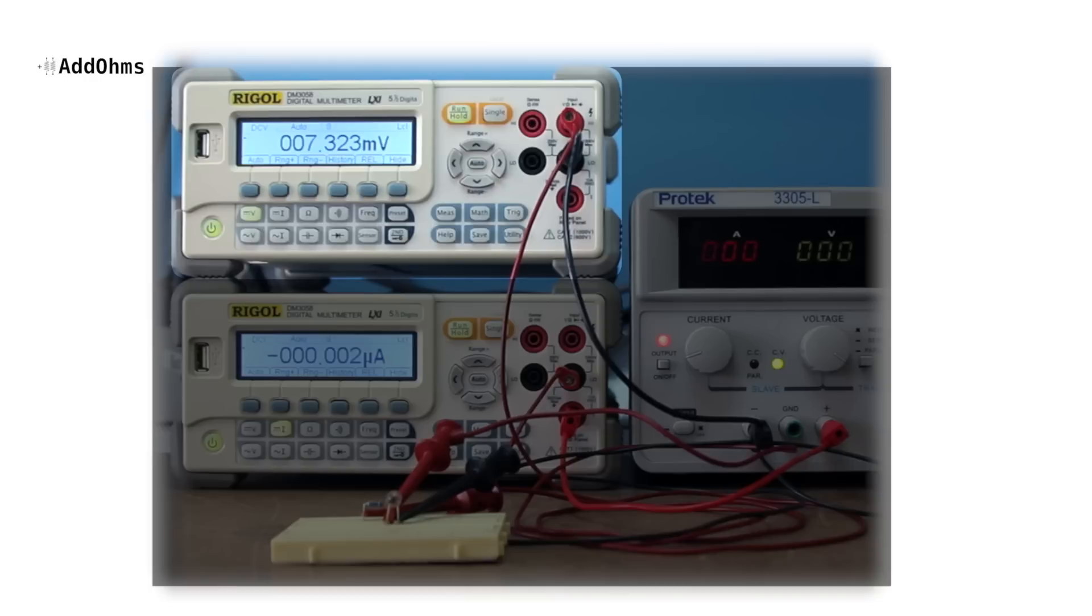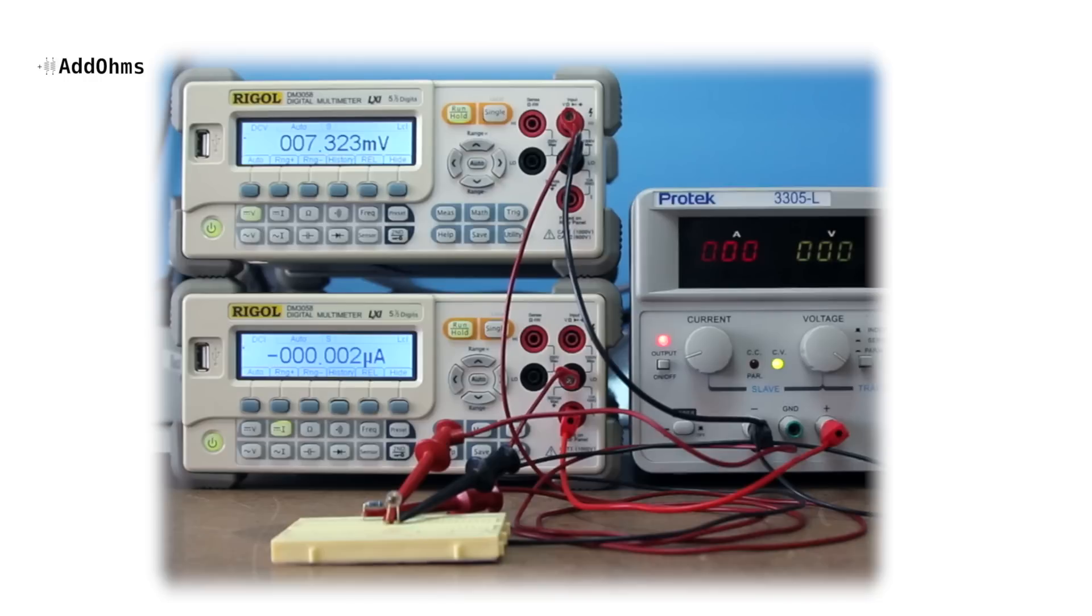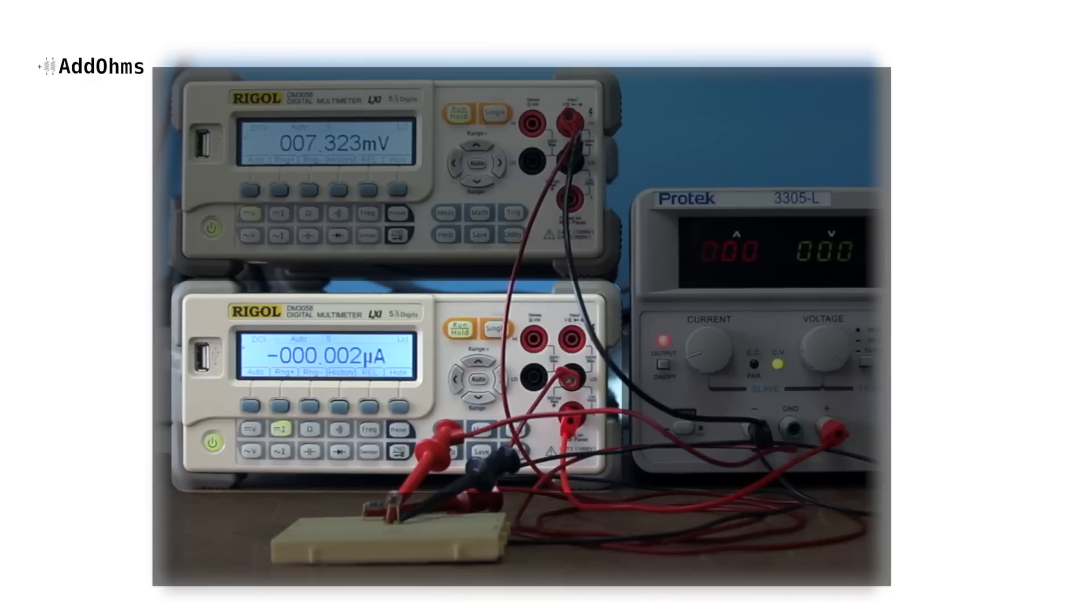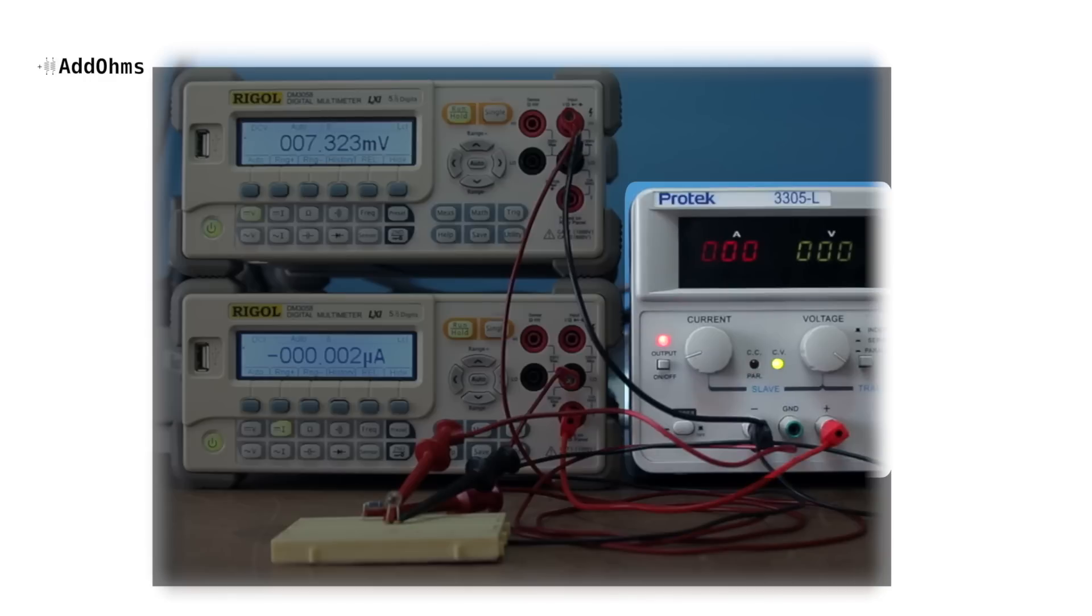The top meter will monitor the voltage drop across the LED, while the bottom is measuring the current through the LED. Instead of a battery, we're using this bench power supply to provide the voltage and current to the circuit.